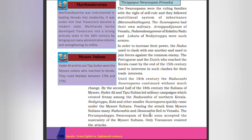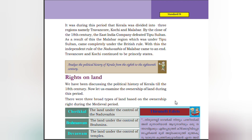Fearing attack from the Mysore sultans, many Naduvalis and their followers fled to Venad. The Perimpadapu Surubham of Kochi soon accepted the sovereignty of the Mysore sultan. Only Travancore resisted these attacks. It was during this period that Kerala was divided into three regions: Travancore, Kochi, and Malabar. By the close of the 18th century, the East India Company defeated Tipu Sultan. As a result, the Malabar region which was under Tipu Sultan came completely under British rule, and the independent rule of the Naduvalis of Malabar came to an end.